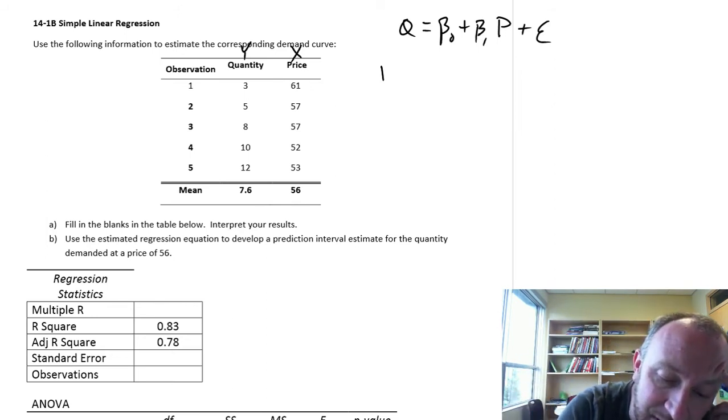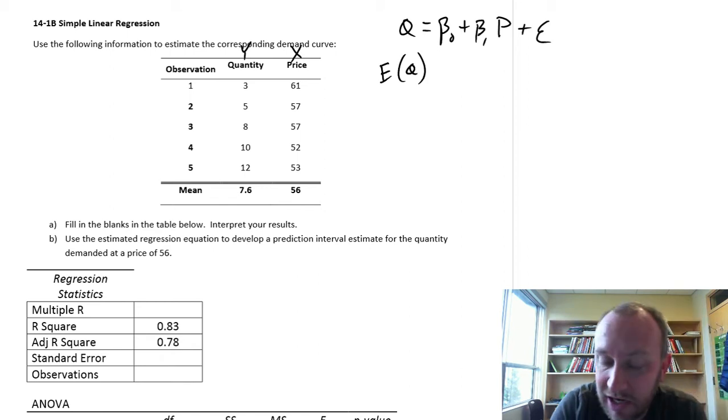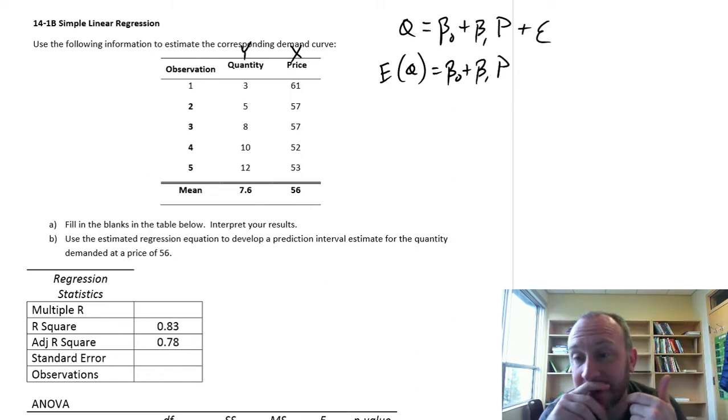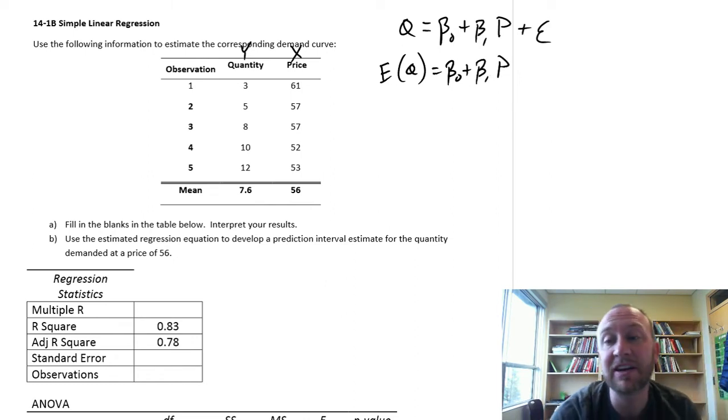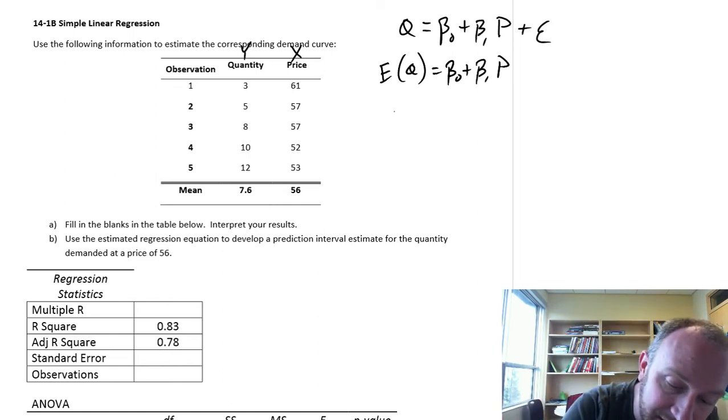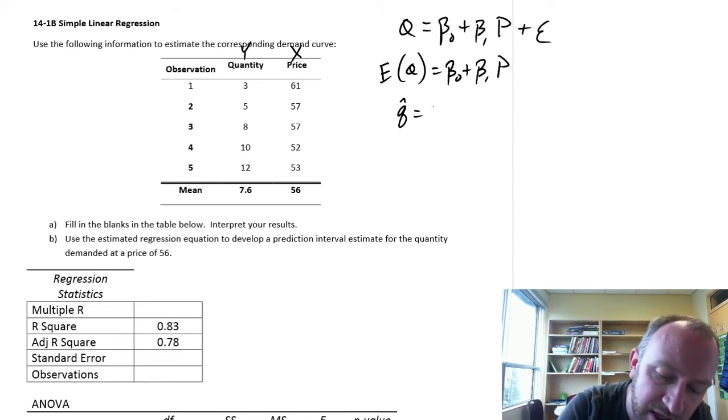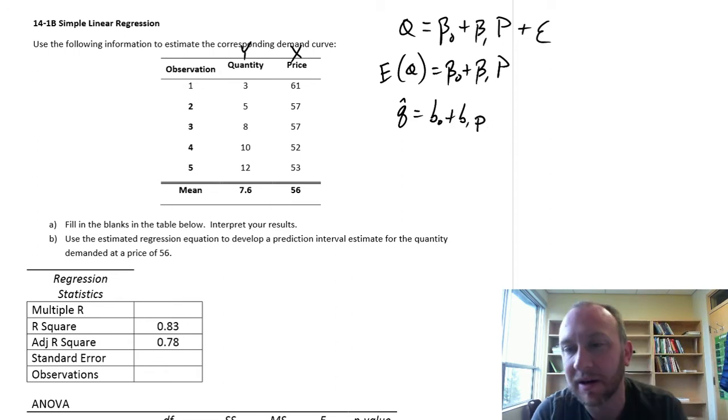So what we estimate is the regression equation. We're looking at the expected value of quantity. If you give me some price, I can estimate what the average quantity demanded will be at that market price. I'll denote it lowercase q with a hat, just like our y hat, equals b0 plus b1 and here's our independent variable price.